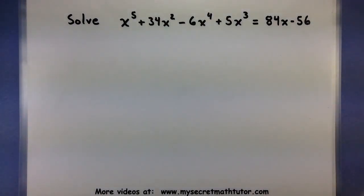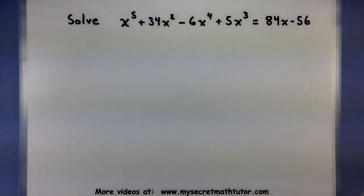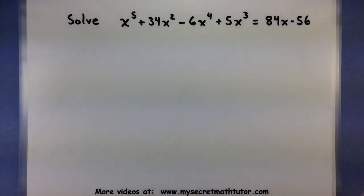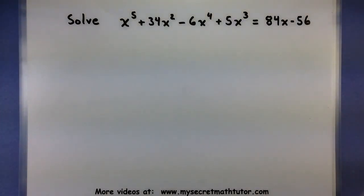I want to solve x to the fifth plus 34x squared minus 6x to the fourth plus 5x cubed, all equal to 84x minus 56. So this is a rather large polynomial equation, but you'll see through the factoring process we'll be able to figure out all of its solutions.